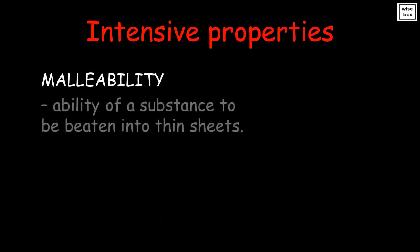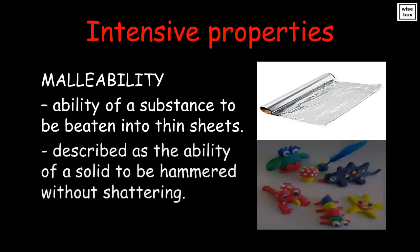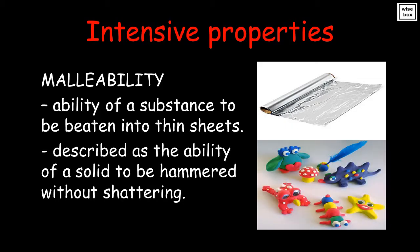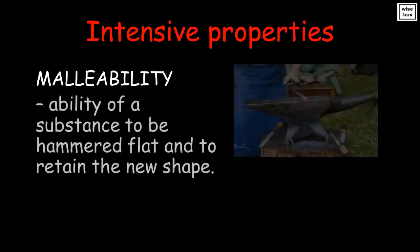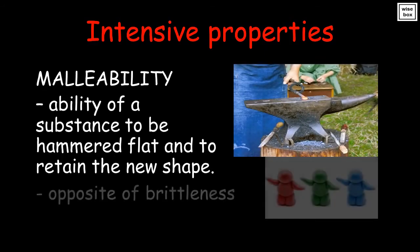Malleability is the ability of a substance to be beaten into thin sheets. It describes the ability of a solid to be hammered without shattering. It is the ability of a substance to be hammered flat and to retain the new shape. It's the opposite of brittleness.